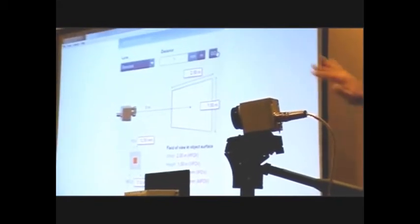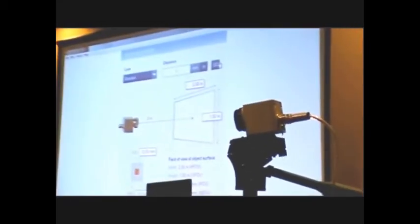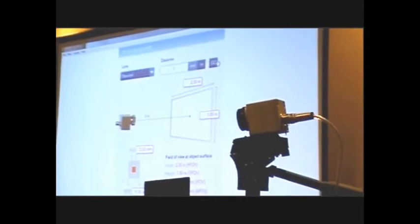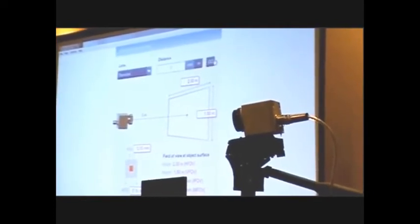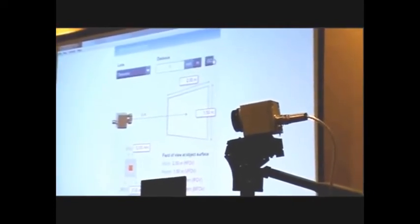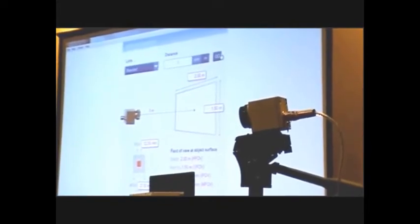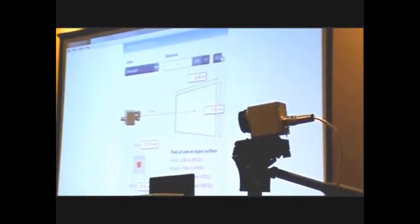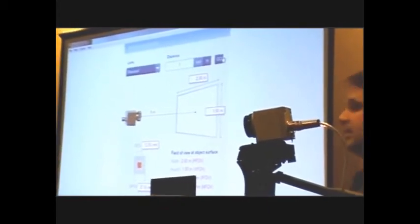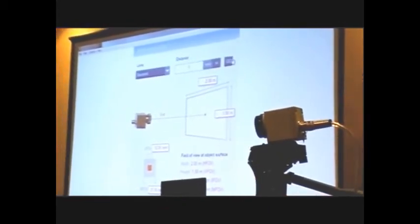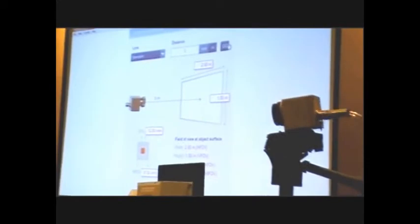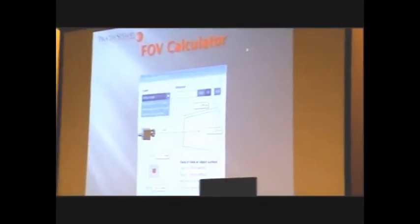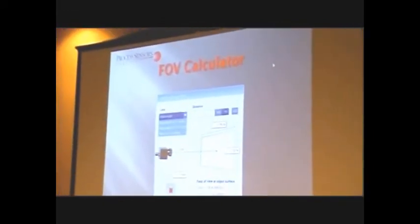Now that gives you the ability to show what the width is and the height of the field of view. And also the pixel size, the actual size of one individual pixel, plus the size of a three-by-three pixel. Because these are both options within the software, as far as a region of interest. So as I explained, that comes with the disks that everyone's got.